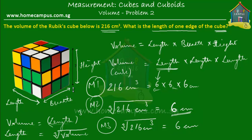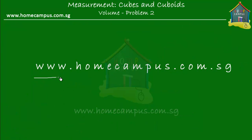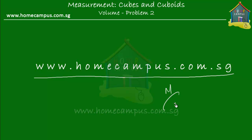The answer, six centimeters, is the length, the breadth, and also the height. If you wanted to check, you could do six times six times six, which gives you 216 — and that's the volume. I hope you got what was taught, and I hope you'll go and do some practice at www.homecampus.com.sg. This is M signing off for now. Bye-bye.